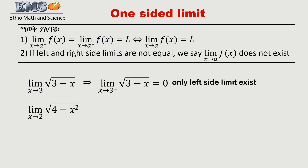Another example: the limit of x squared minus 6x as x goes to 2. We will find both one-sided limits. From the left side we approach, plugging in numbers approaching 2 from below.